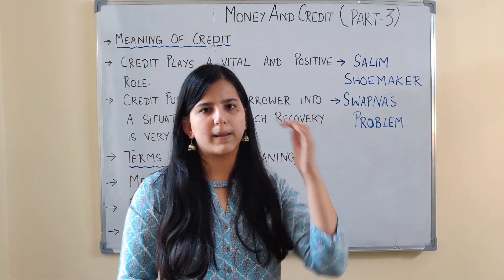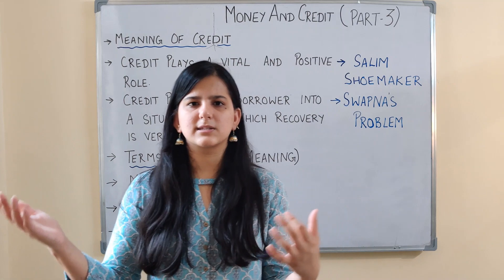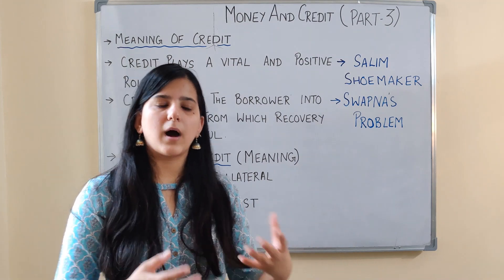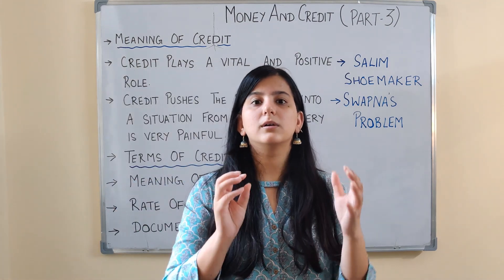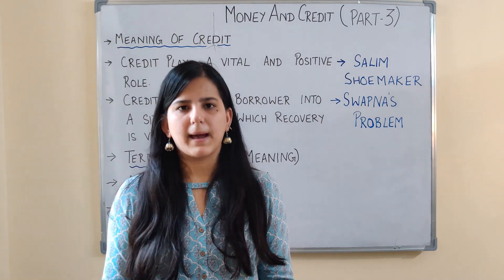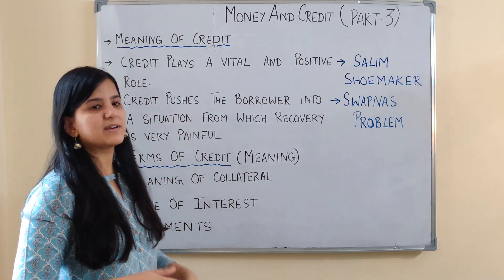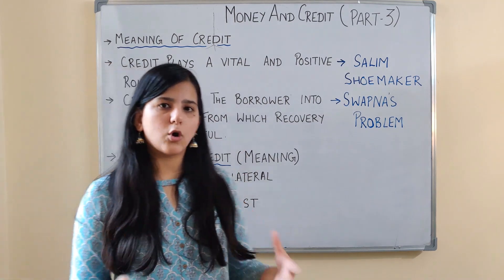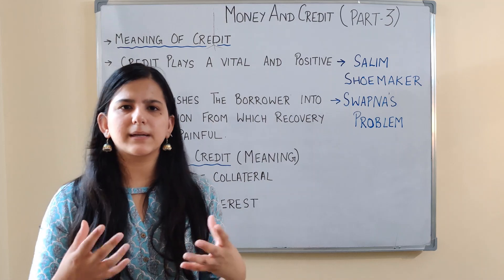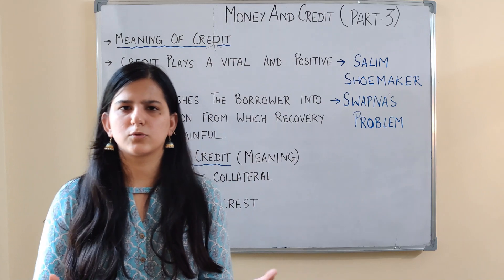When the next harvesting season came, she had to take another loan for production inputs. Even though that crop was normal, she still didn't have enough money to pay back both the current and previous year's debt. In this way, every year the debt kept increasing and the farmer was caught in a debt trap — a situation where you owe so much money that you are unable to pay it back.